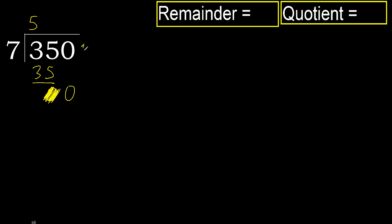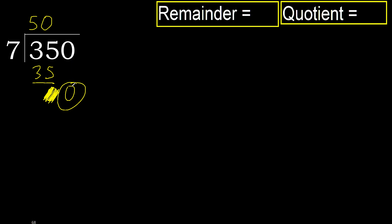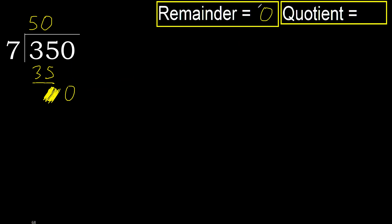Therefore next — that is not a number, therefore finish it. Complete, always complete with 0. Complete because here we finish with this number. 350 divided by 7 is 50.